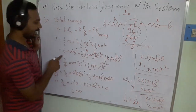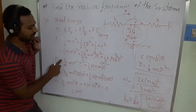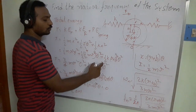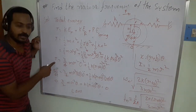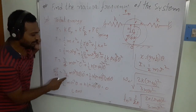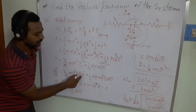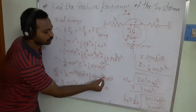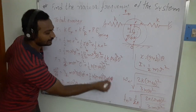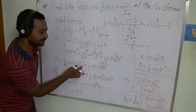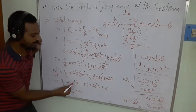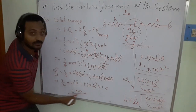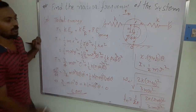Simplifying the equation gives: (3/4)mr²θ̇² + ½k(r + b)²θ² = constant. Since the total energy is constant, we differentiate with respect to time: (3/4)mr² · 2θ̇·θ̈ + ½k(r + b)² · 2θ·θ̇ = 0. Since θ̇ ≠ 0, we cancel it, giving the equation of motion: (3/2)mr²·θ̈ + k(r + b)²·θ = 0.